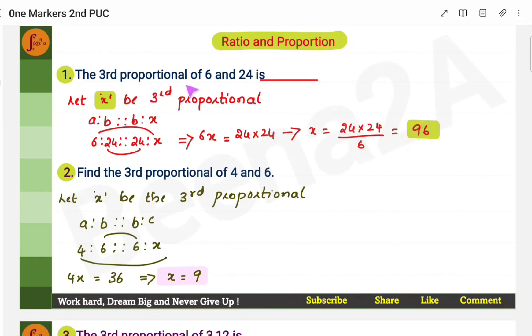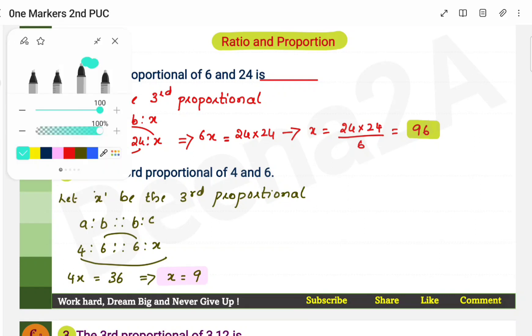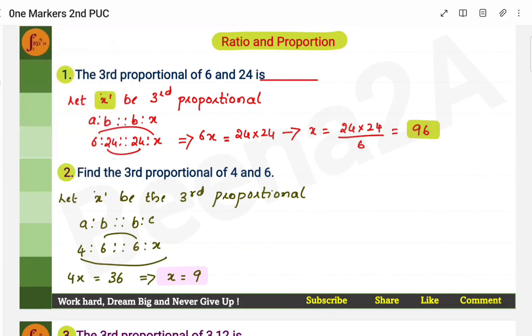The third proportional of 6 and 24 is - now what is third proportional? Third proportional means the last term. You have a is to b in proportion to b is to x. This x, the last term is what you have to find whenever they say third proportional.